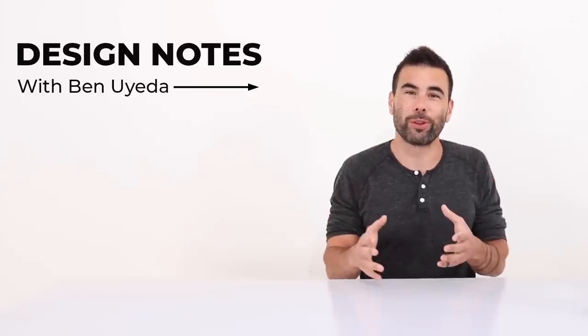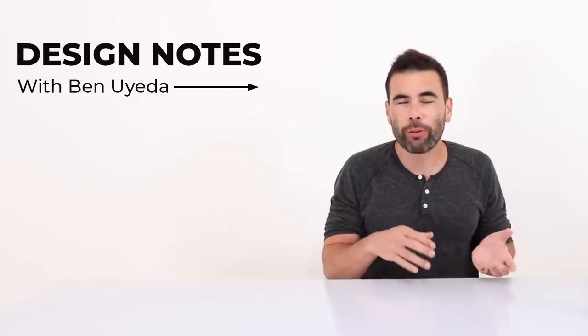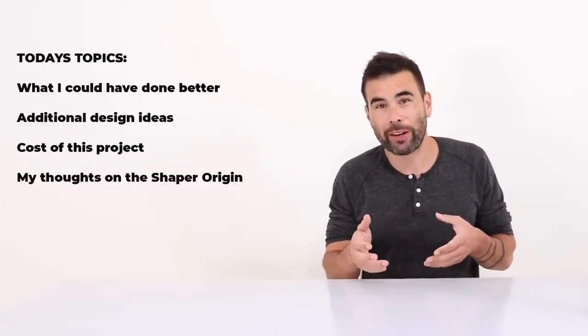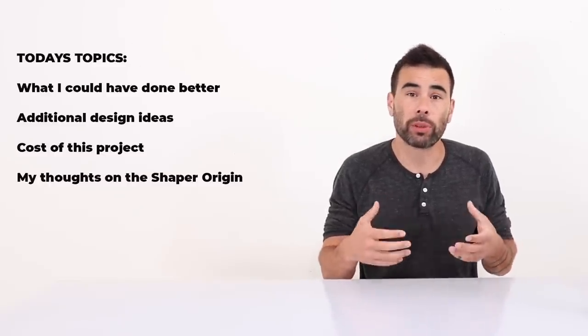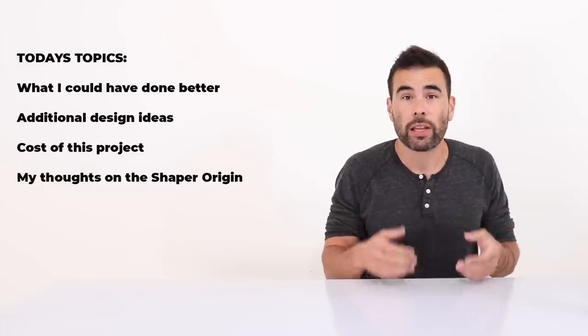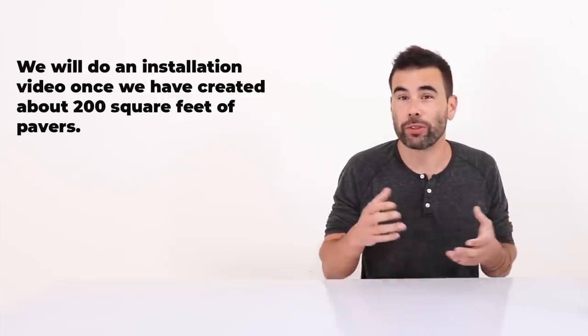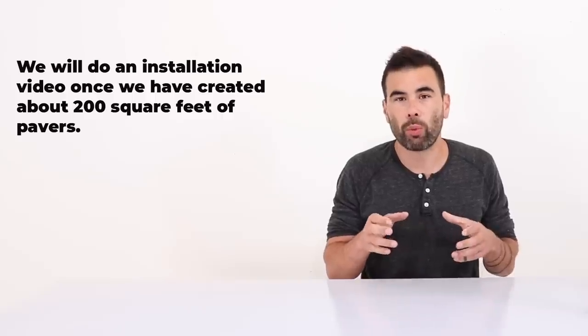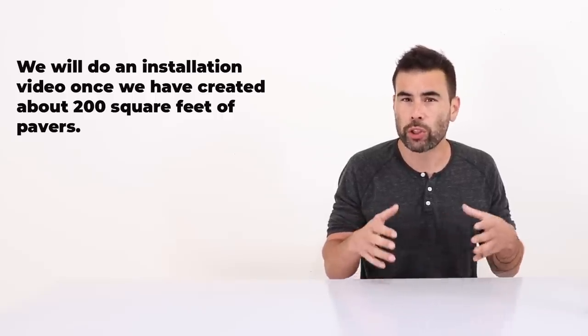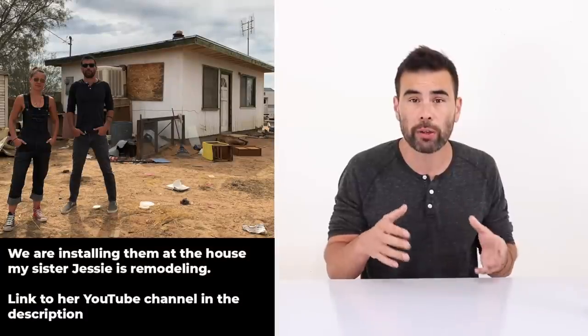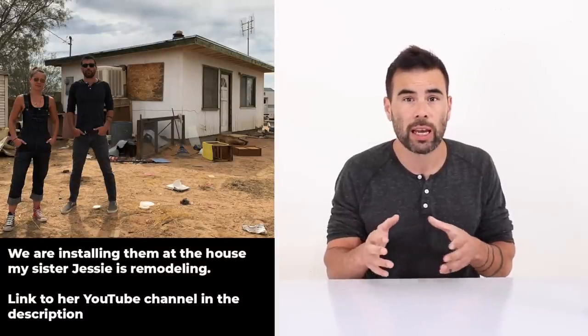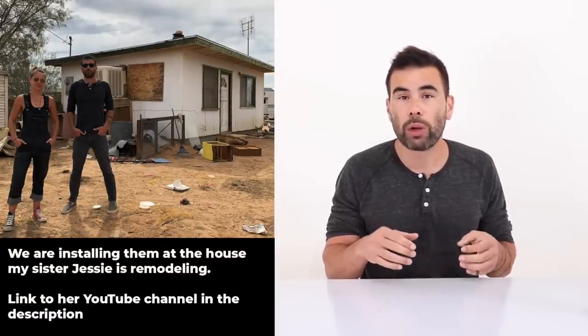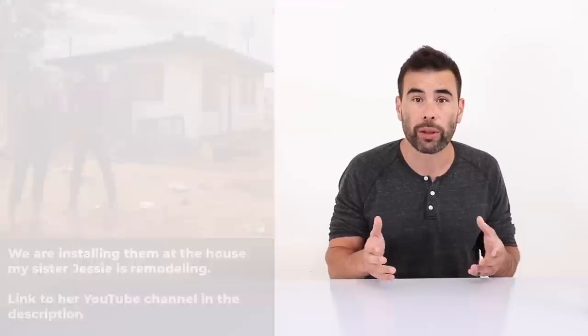Alright, welcome to the design notes portion of the video where I'll go over some of the things I probably could have done a little bit better, and talk about additional options for a project like this. Now, this video was about the initial design and fabrication of the system, but we'll do a follow-up one once we've built out a few more pavers. We're shooting for around 200 square feet to be installed at my sister Jessie's house, and we'll do a video that shows how we installed that and whatever additional features that we came up with.